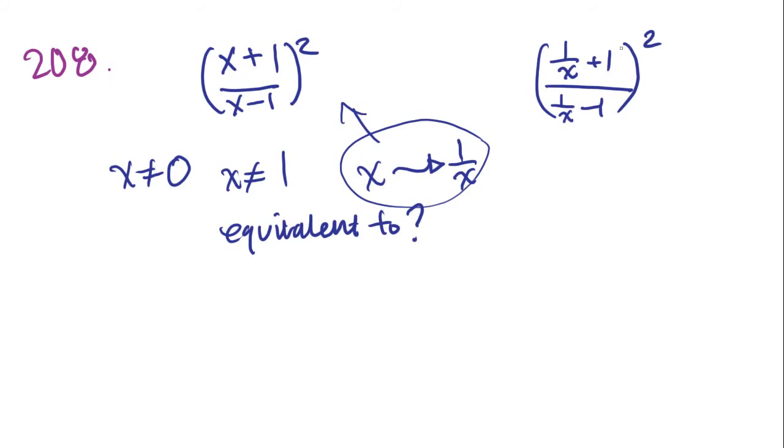So let's plug this in first and see what happens. 1 over X plus 1 over 1 over X minus 1 squared. Since 1 is X over X, what we're going to get is 1 plus X over X over 1 minus X over X squared. Cancel out the X's and we get 1 plus X over 1 minus X squared.